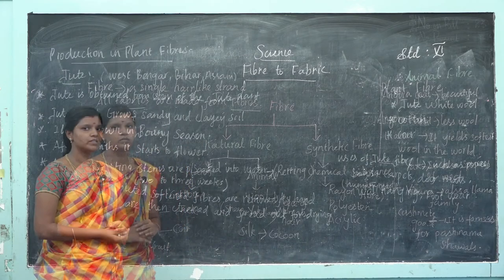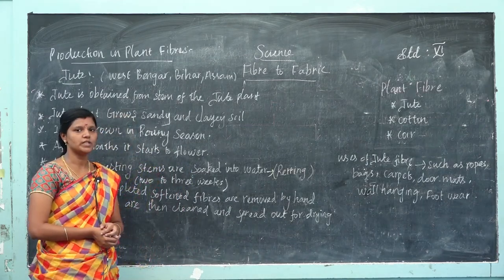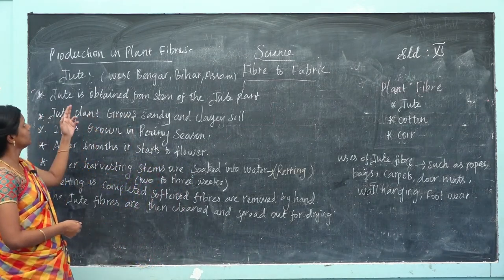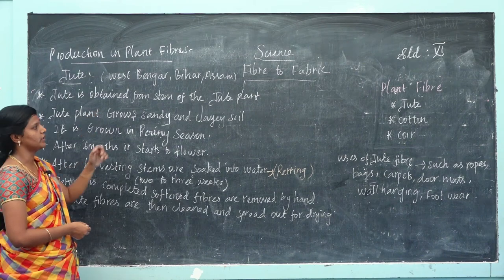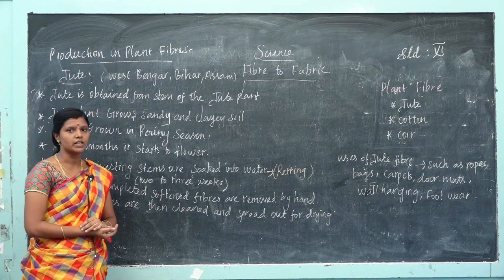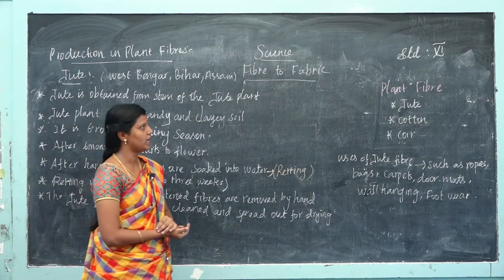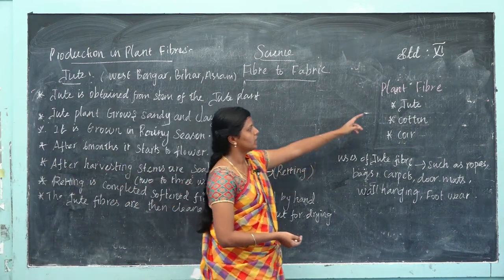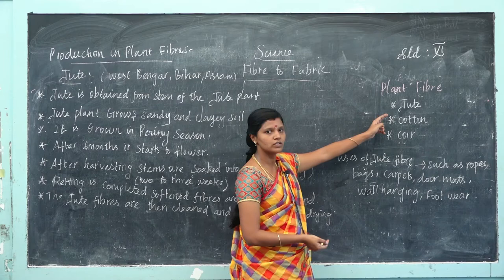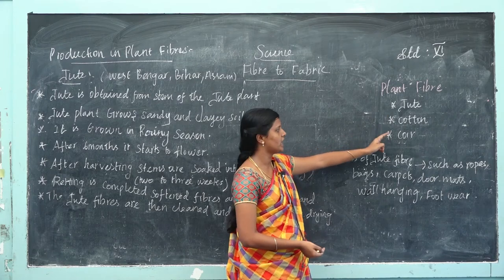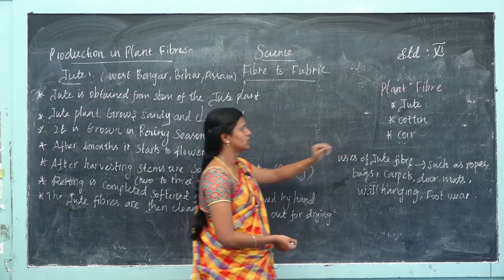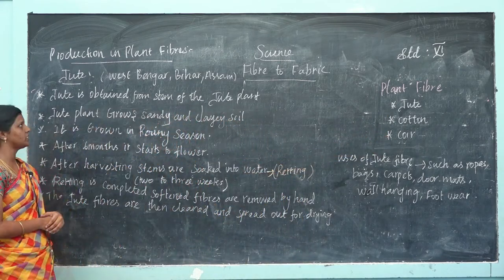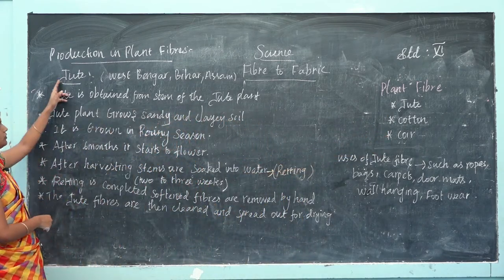Next we move to today's topic. Today's topic is production of plant fibers. We already know that plant fibers are obtained from the jute plant, cotton plant, and coir. We are going to see about jute fiber.